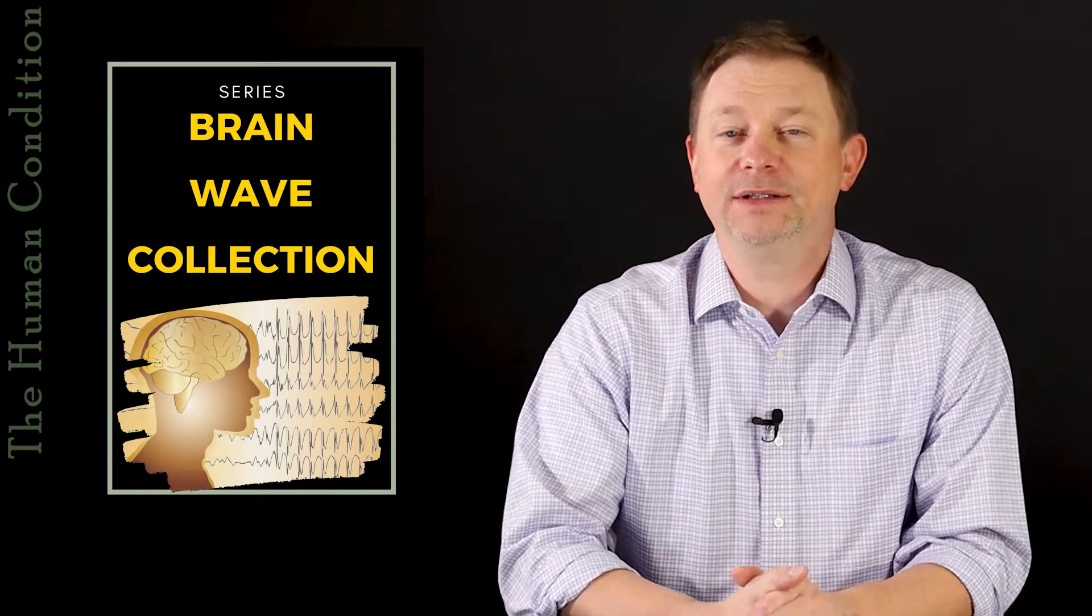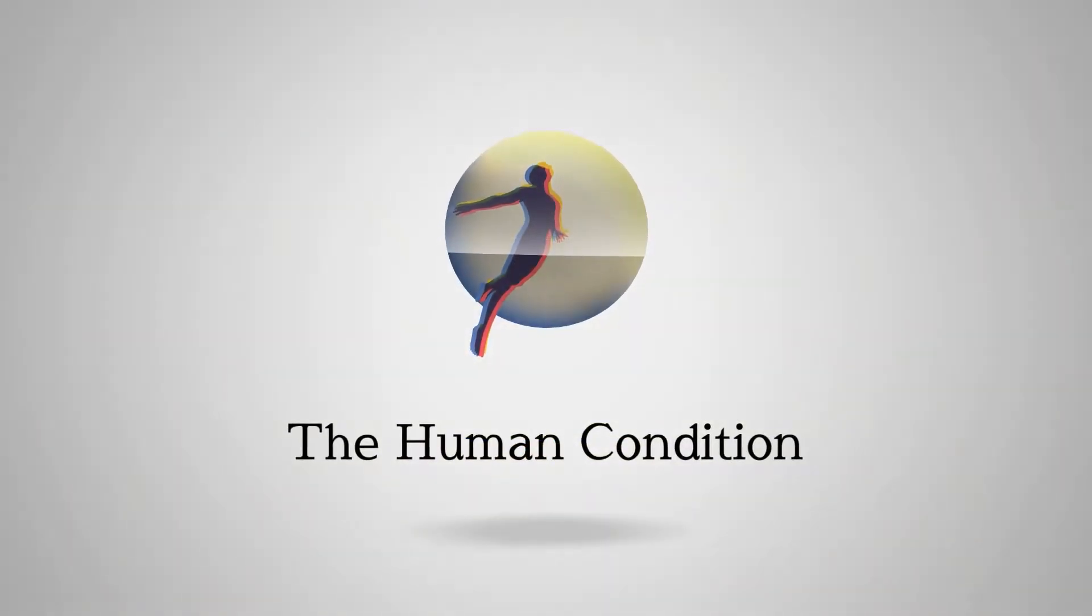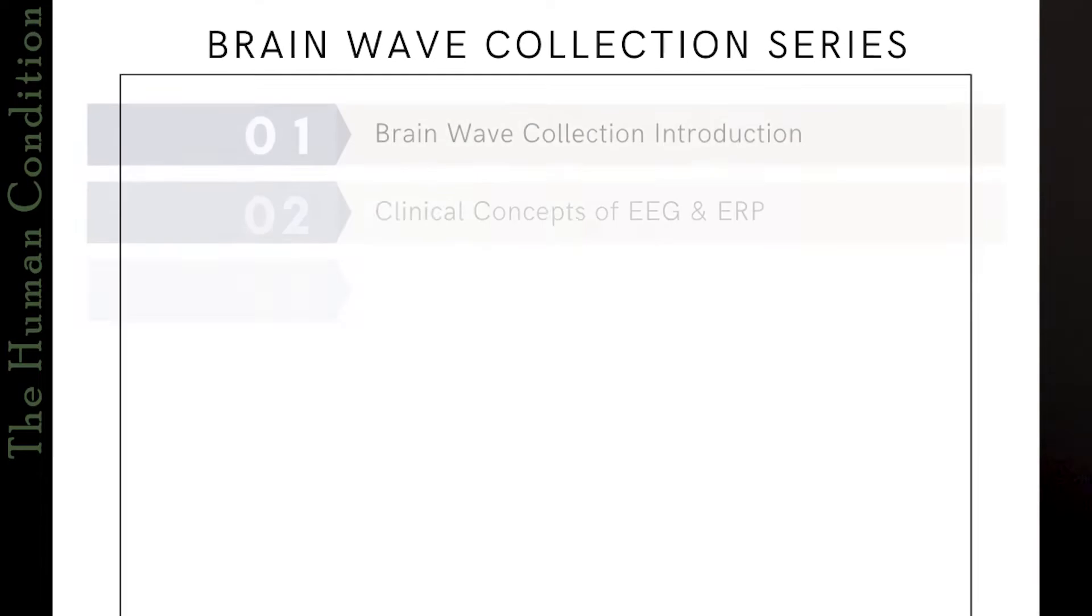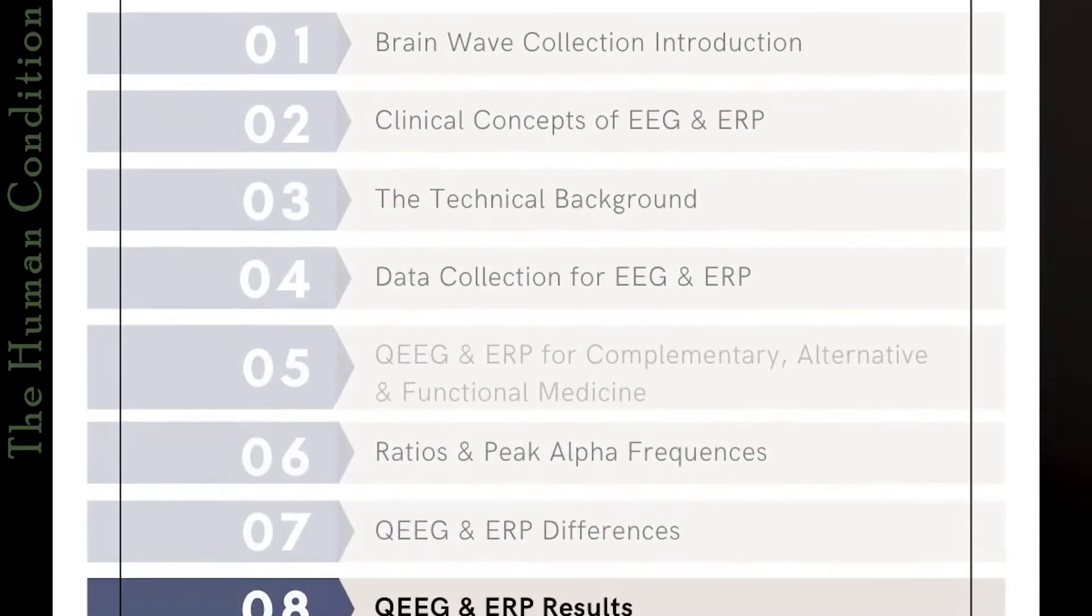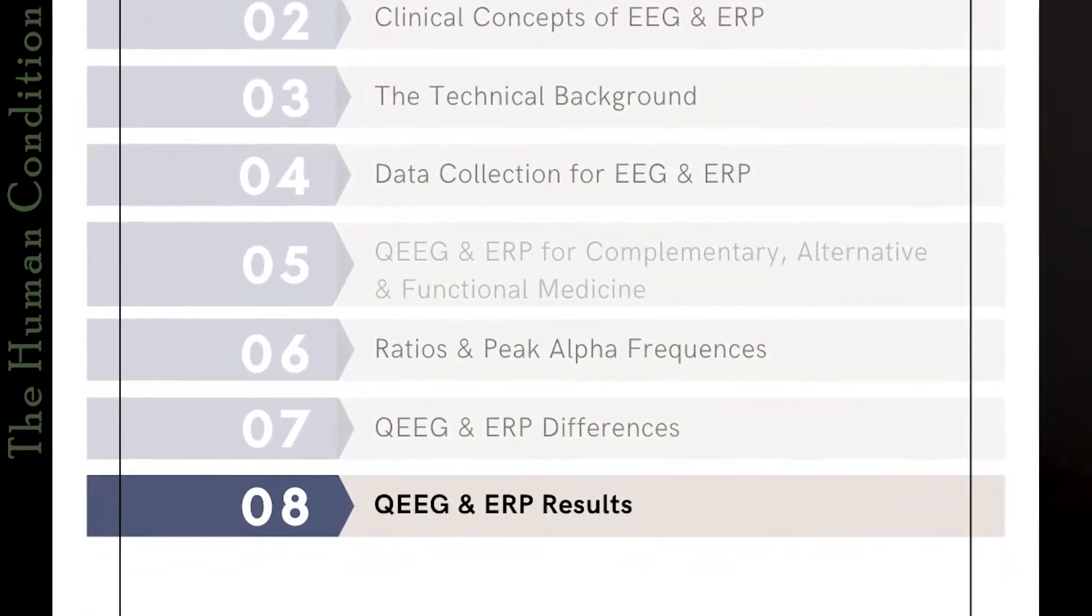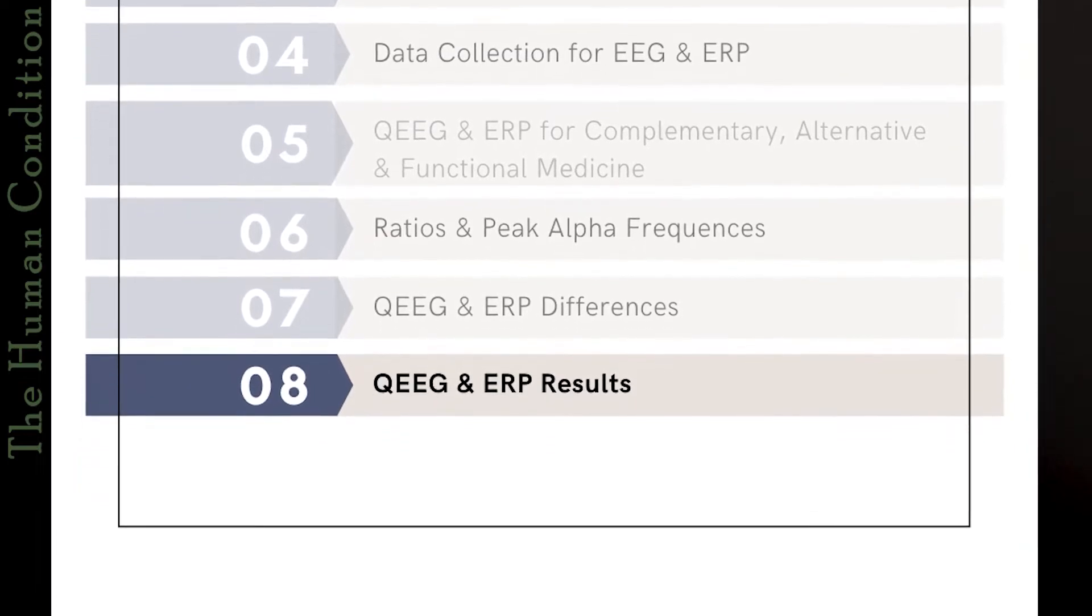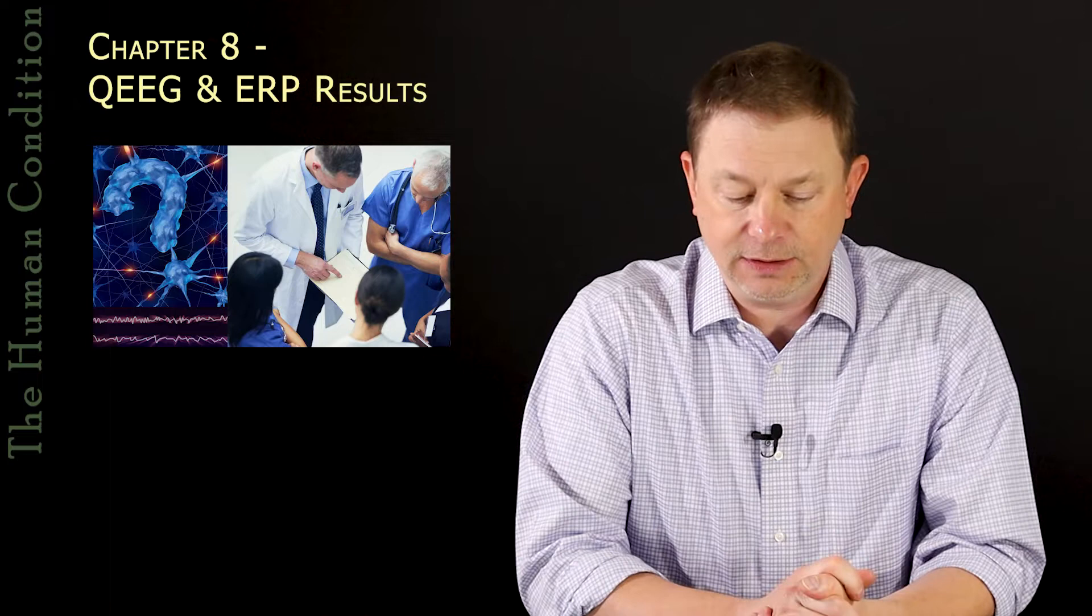Hello and welcome. I'm Michael Pierce and this is The Human Condition. We are doing Chapter 8, the results section of the EEG and ERP for Complementary, Alternative, and Functional Medicine Practitioners, their patients and technicians.